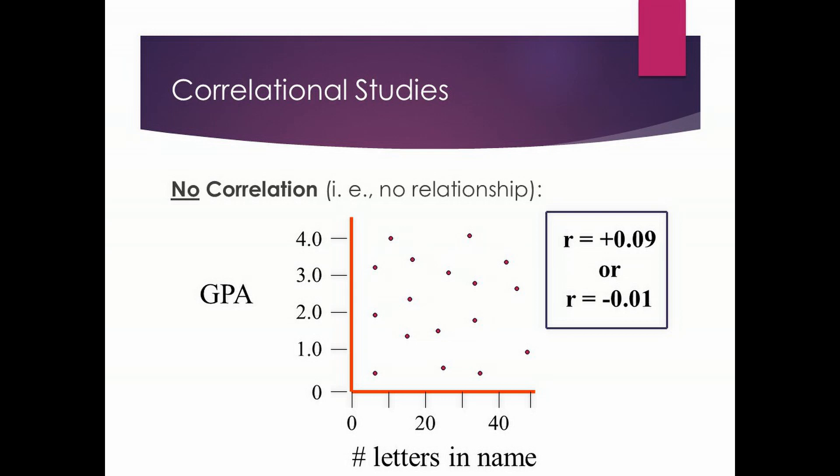So now you can interpret a correlation coefficient. First, look at the sign — positive or negative — which only tells you the direction of the correlation. Then look at the value: how far is it from zero, and how close is it to 1 or minus 1? That tells you the strength of the relationship — how related the two variables tend to be.